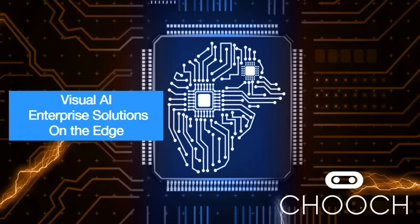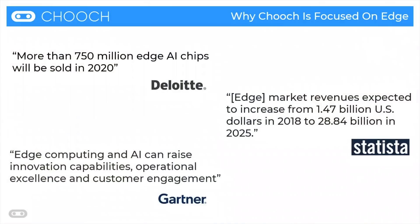Hi everybody, this is Emrah Goltekin and I am the co-founder and CEO of Chooch AI. Today we're going to talk a little bit about visual AI on the edge. As a company, what we do is we clone human visual intelligence into machines. We've been doing this for some time on the cloud, but most recently we've been able to put a lot of our models onto the edge, and we did this for three main reasons.